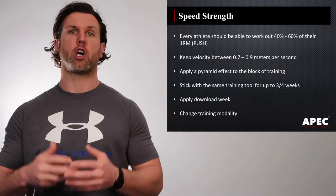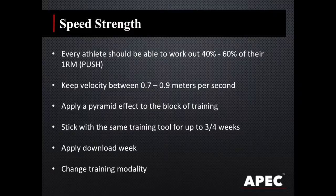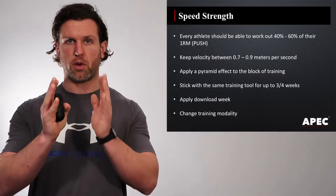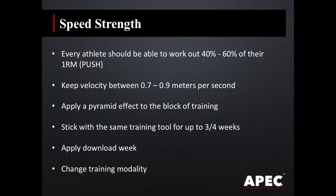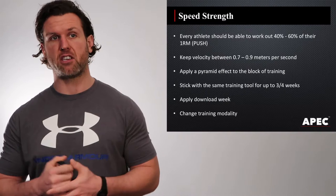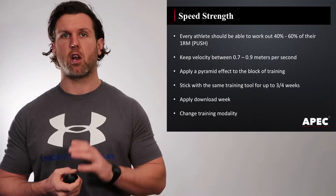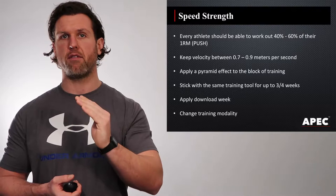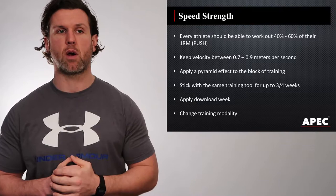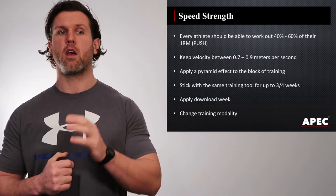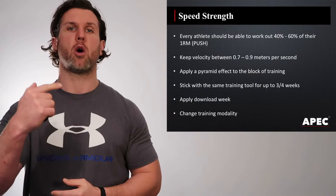Let's go on now and look at our power-type training or speed-strength-type training. Every athlete should be able to work out 40% to 60% of their 1 repetition max using the PUSH band. Keep the velocities between 0.7 to 0.9 meters per second in order to best develop that speed-strength quality. Apply a pyramid-type effect to the block of training, sticking to the same training tool for 3 to 4 weeks, applying a download, and then changing training modality on the 6th week.